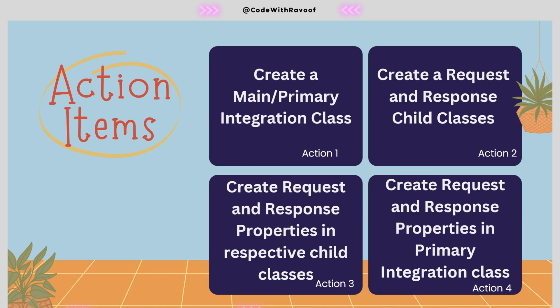Whatever child classes we created in action two, we now need to create the response and request properties for them. Action four — creation of the request and response page properties in the primary integration class. These are the four action items, so let's move forward to understand each one respectively.